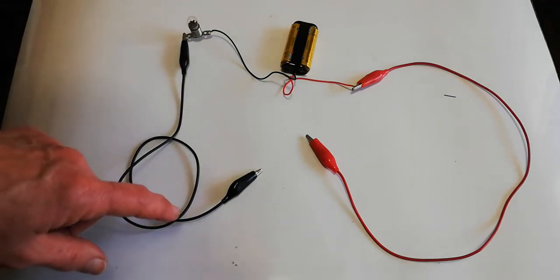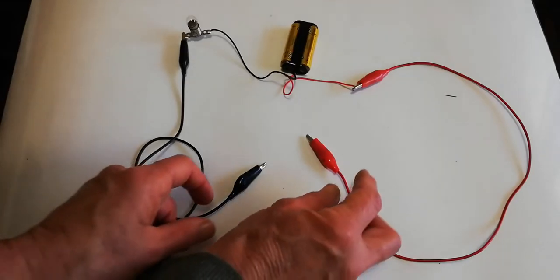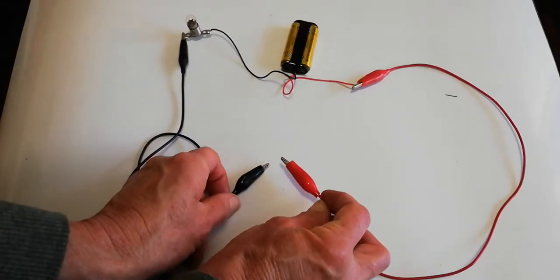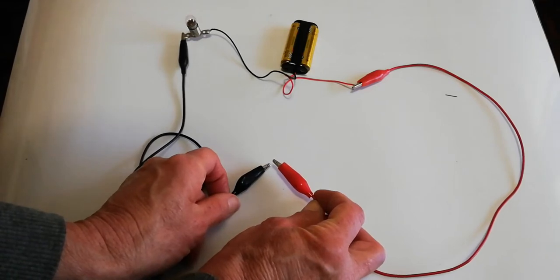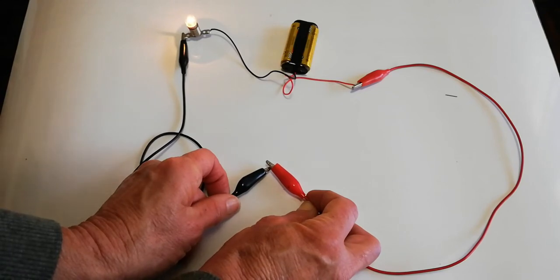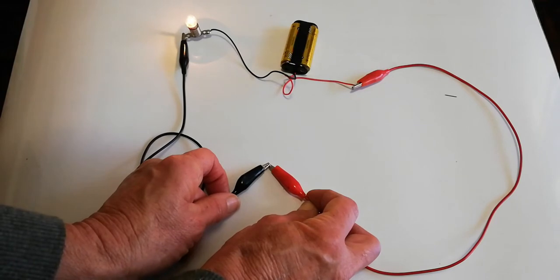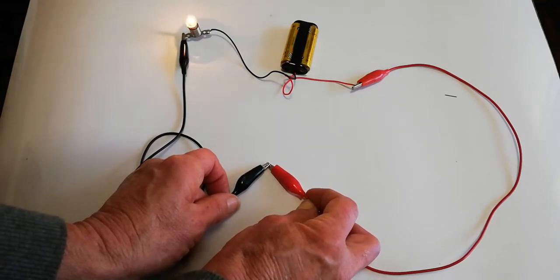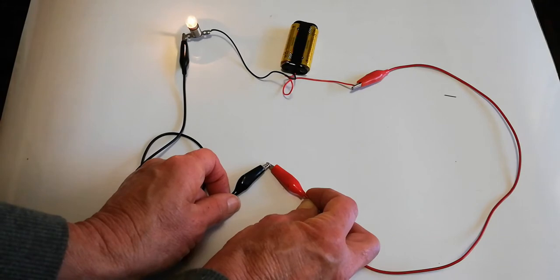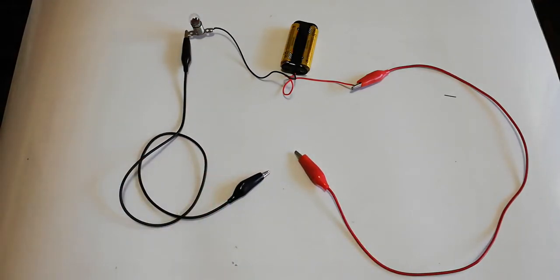We are also going to make sure that this is working. So this is like our control. I'm going to touch these two together and if the circuit is operating correctly the light will come on. There we go. Can you see that? It's nice and bright. One of the questions they ask you is to see how bright it is when they connect, so just try and make a memory picture of how bright that is.